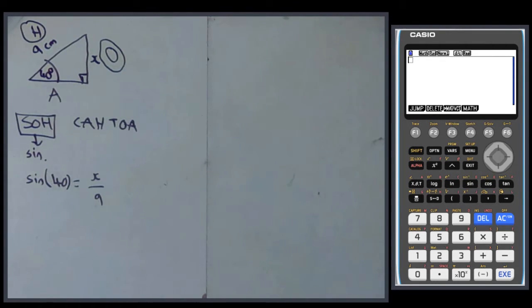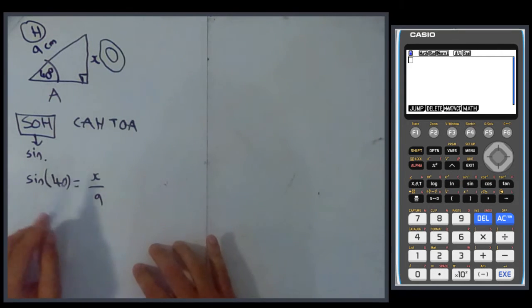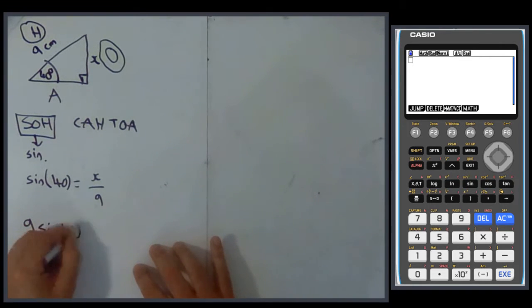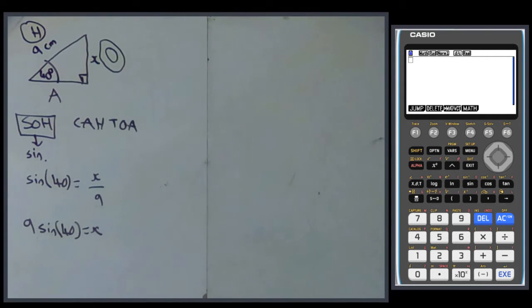The next step is to actually solve the equation. There are other methods, if you have a decent calculator, there are solvers, but you really should be able to do this algebraically. You need to get the x on its own, x is what we want, so we need to get rid of this 9. We're going to multiply both sides by 9. So you're going to say 9 sine 40 equals x. So now we've got an expression to find x. Now, we go to our calculators.